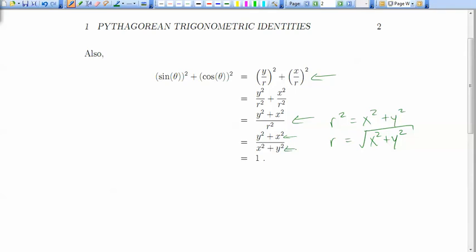So we can replace r squared with x squared plus y squared, and we see that we have one thing over itself, and that's going to be 1. So that means for any angle theta, it doesn't have to be any special property at all, we always have that the sine of theta squared plus the cos of theta squared will equal 1. And that's true for every angle theta.